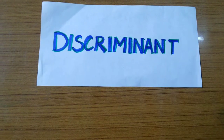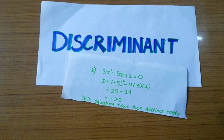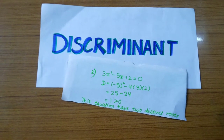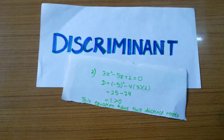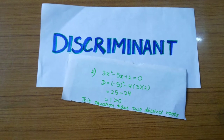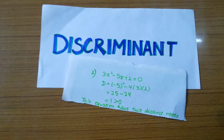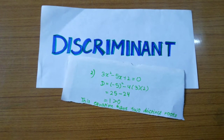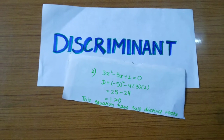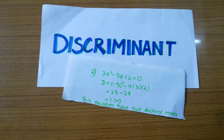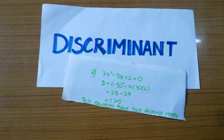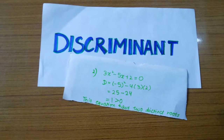Second example: 3x squared minus 5x plus 2 equals zero. When we put the values into D equals b squared minus 4ac, we get 1, which is greater than zero. Thus this equation has two distinct real roots.